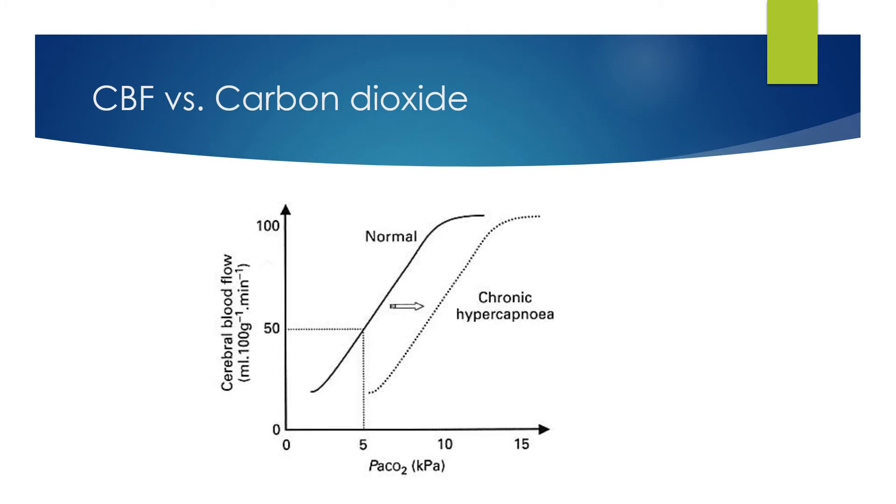When we look at cerebral blood flow versus carbon dioxide, it's very much a relationship of direct proportion. At high arterial carbon dioxide tensions, blood vessels dilate and therefore cerebral blood flow increases up until approximately 10 kilopascals where blood vessels are maximally dilated. Likewise, when arterial carbon dioxide tension is low, blood vessels constrict and blood flow reduces down to approximately 2 to 2.5 kilopascals, at which point the blood vessels cannot constrict anymore.